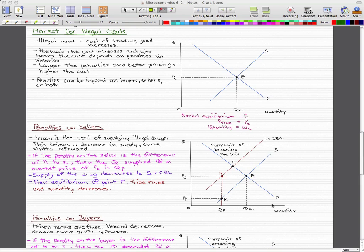As we see here, this was our free market with the blue lines, the blue supply curve, and the blue demand curve. With the penalty on the seller, the difference is actually H and K. This is the penalty to the seller, and I should probably write that down. So this is to the seller, this red line.